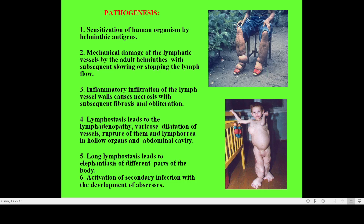Due to blockage of lymph flow and realization of fibrosis and obliteration, lymphostasis develops, followed by varicose dilatation of vessels, rupture of them, and lymphorrhea. Lymphorrhea may be realized not only in extremities — it may occur in hollow organs and in the abdominal cavity, which can be very dangerous and fatal. Long-standing lymphostasis leads to elephantiasis of different parts of the body. Chronic lymphatic insufficiency plus elephantiasis causes disturbance of trophic of extremities and activation of secondary infections with development of abscesses.